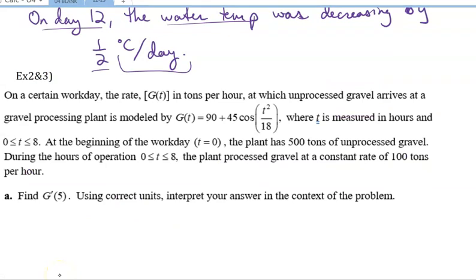Here we have, on a certain workday, the rate, which is G of T in tons per hour. So this is already a rate function, at which unprocessed gravel arrives at a gravel processing plant, is modeled by this. T is measured in hours, and it's over the time 0 to 8. At the beginning of the workday, which is T equals 0, the plant has 500 tons of unprocessed gravel. So this is an initial amount. May or may not be important, probably not for this part. During the hours of operation, the plant processed gravel at a constant rate of 100 tons. So that's the rate that the gravel is being processed. But we are looking at the G function, which is the rate that the gravel is coming into the plant.